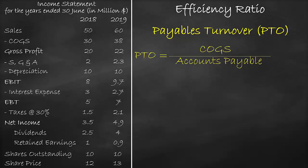We use the cost of goods sold with accounts payable because both of them are costs. We get the cost of goods sold from the income statement and we get the accounts payable from the balance sheet.